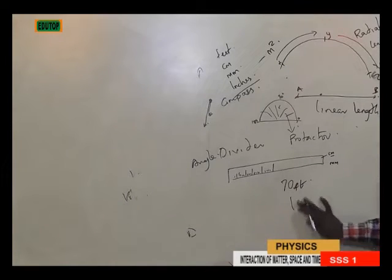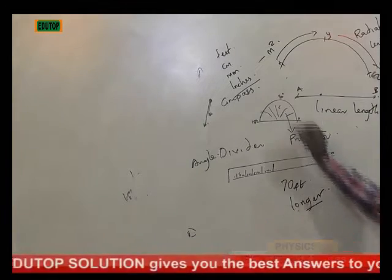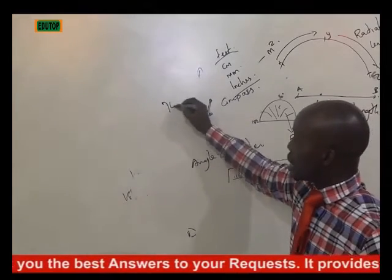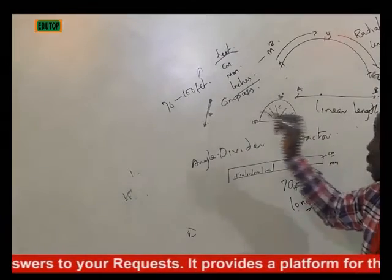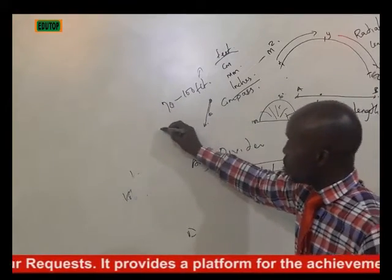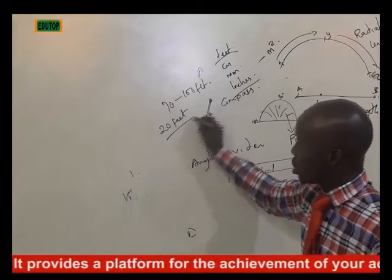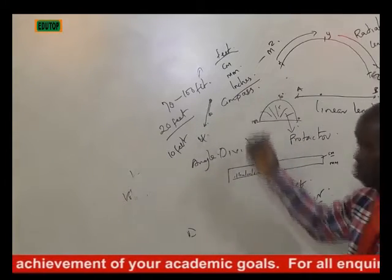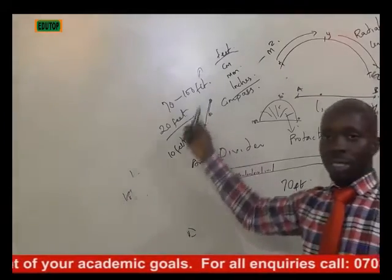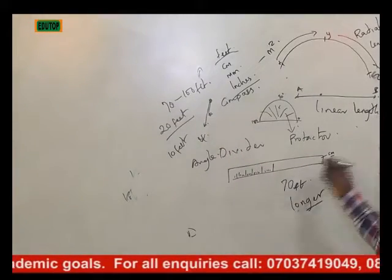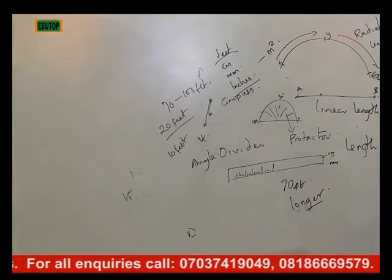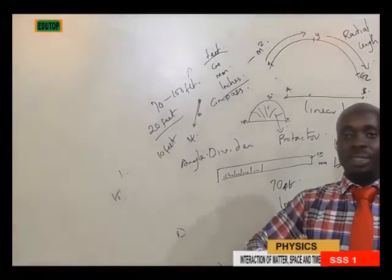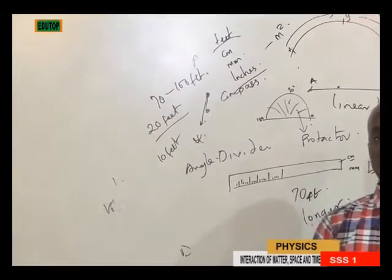When measuring length, you must know the difference between feet, centimetres, millimetres, and inches. For long lengths, you look at feet. If you measure the distance of a room from one end to another, you might get 70 to 100 feet for a large hall, or maybe 20 feet for a standard room, and some small rooms may be just 10 or 4 feet. Those are the measuring activities that can be done under measurement.